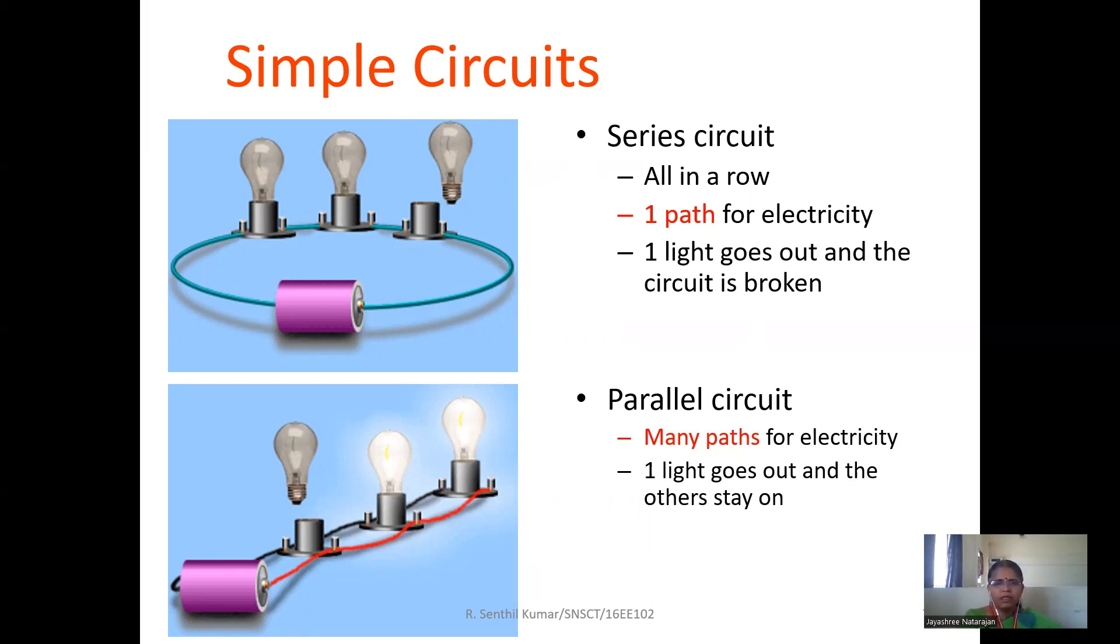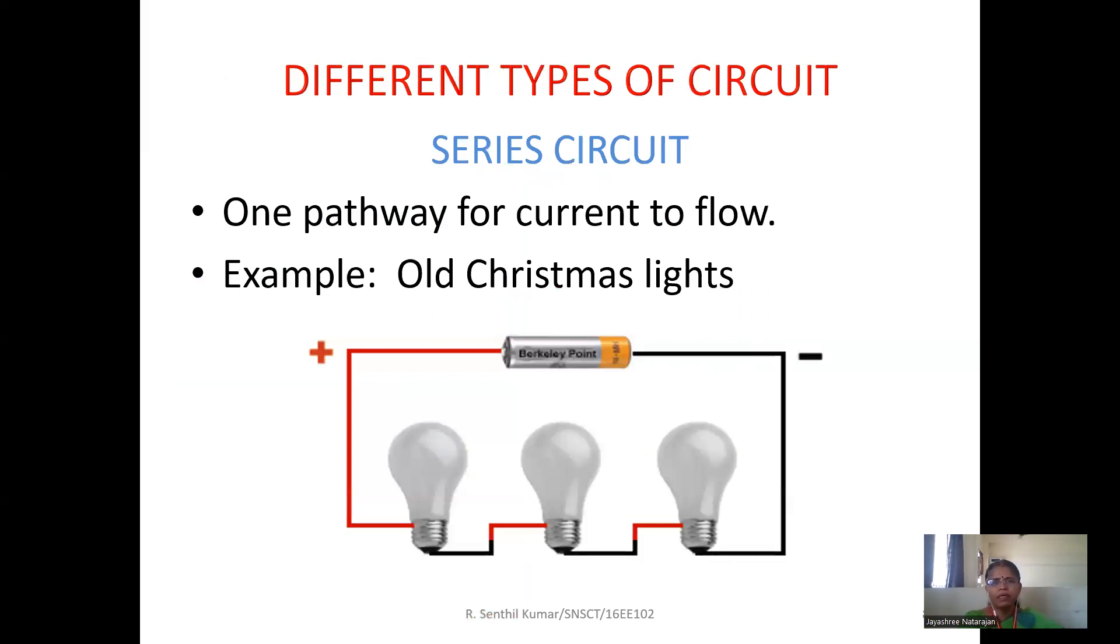In parallel circuit, look into the second picture. This is a parallel circuit. Here all the lamps are connected on either side of the battery. In this type of circuit we call it as a parallel circuit. The main advantage is if one light goes off, then the remaining two lights are still in working condition. It glows and gives light. So there is a main advantage of this parallel connection.